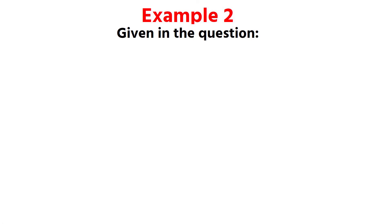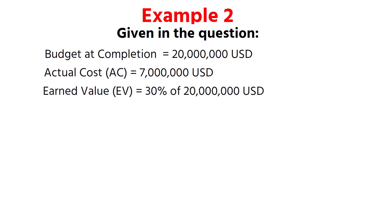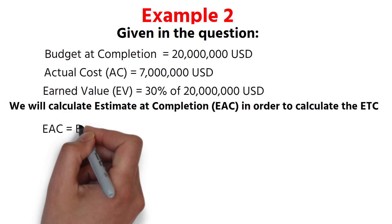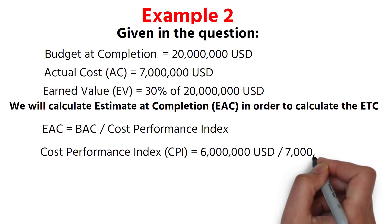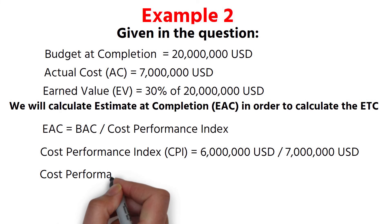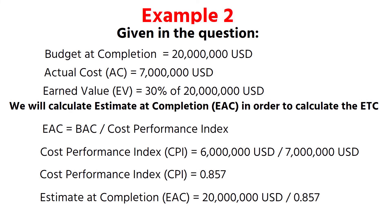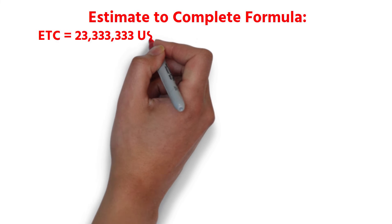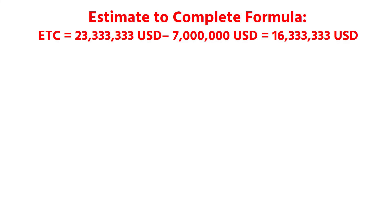Let's calculate the ETC for this project. Budget at completion equals 20 million US dollars. Actual cost equals 7 million US dollars. Earned value equals 30% of 20 million US dollars, which equals 6 million US dollars. We will calculate estimate at completion in order to calculate the ETC. EAC equals BAC divided by cost performance index. Cost performance index equals 6 million divided by 7 million, which equals 0.857. Estimate at completion equals 20 million divided by 0.857, which equals 23,333,333 US dollars. Estimate to complete equals 23,333,333 minus 7 million, which equals 16,333,333 US dollars.